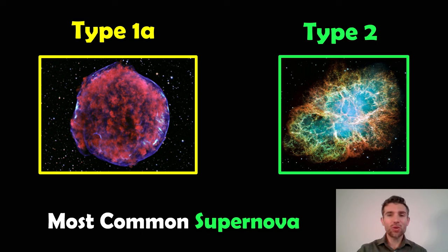The two most common types of supernova are type 1a and type 2. One of those is the death of a massive star, that's type 2, and type 1a is a specific type of supernova that involves a white dwarf star and a red giant.